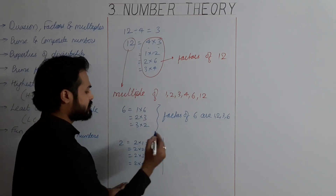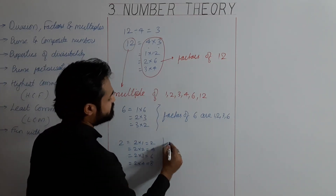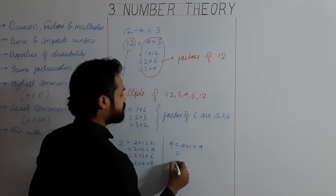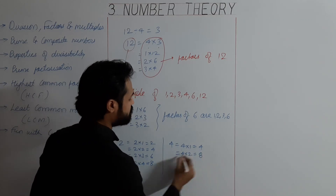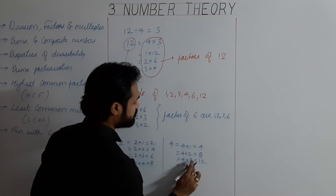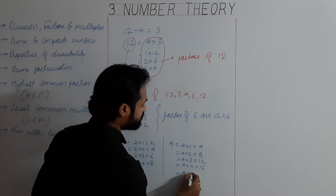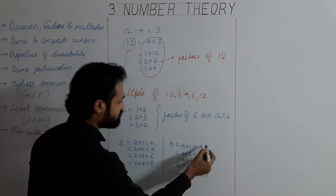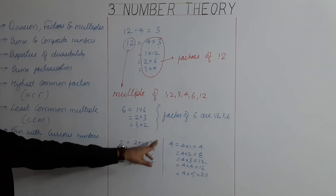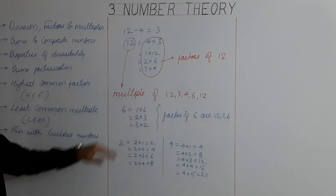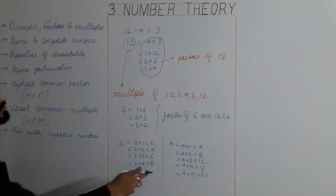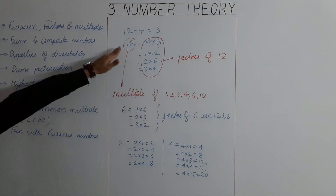For any number, just multiply that number by 1, 2, 3 and so on. For example, for 4: 4 into 1 is 4, 4 into 2 is 8, 4 into 3 is 12, 4 into 4 is 16, 4 into 5 is 20. So 4, 8, 12, 16, 20 and so on are multiples of 4. And 2, 4, 6, 8 and so on are multiples of 2. Multiple means just multiply that number by 1, 2, 3 and you will get all multiples. And 1, 2, 3, 4, 6, 12 are factors of 12.